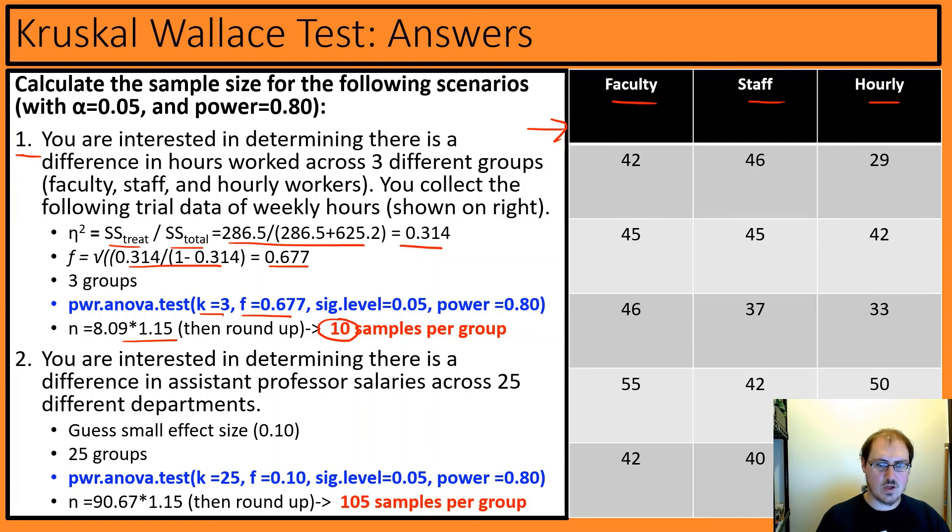Second one, all we're given is that there's 25 different groups. So I'm going to guess a small effect size, 0.1, plug these in, gives us this, times 1.15, we'll round up. So 105 samples per group, which comes out to, I believe it's 2,625 total. So that would be a lot of samples.